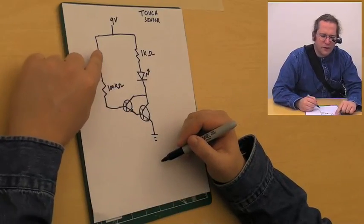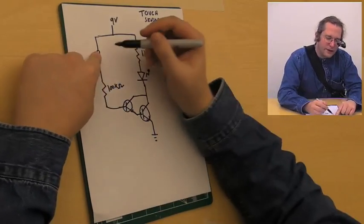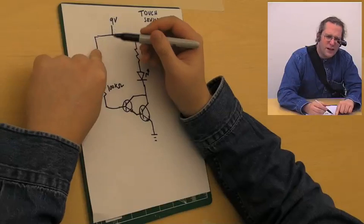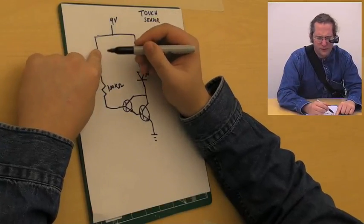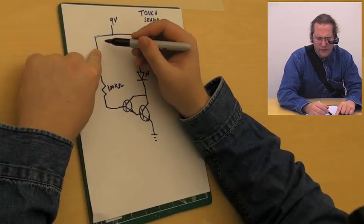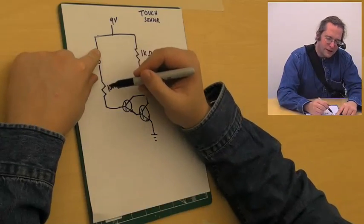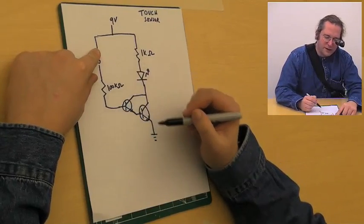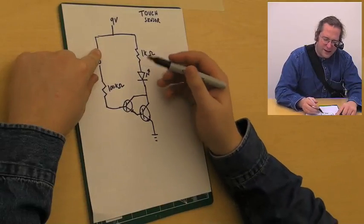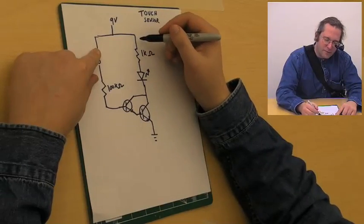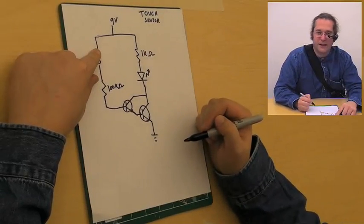However, as soon as you put your finger across these two electrodes here, just enough current, just a little bit, because your skin's got a pretty good resistance to it, but just enough electrons flow through your finger across the skin through this 100 kilo-ohm resistor into the input of this transistor. That causes a cascade of electrons, and you get current pulled through the LED, and it lights up.